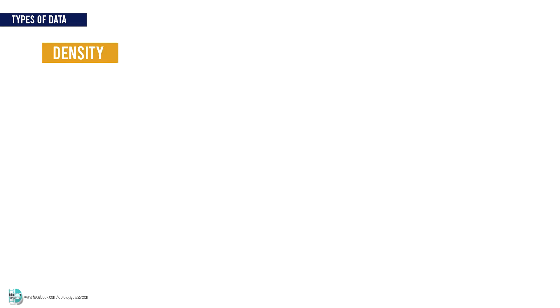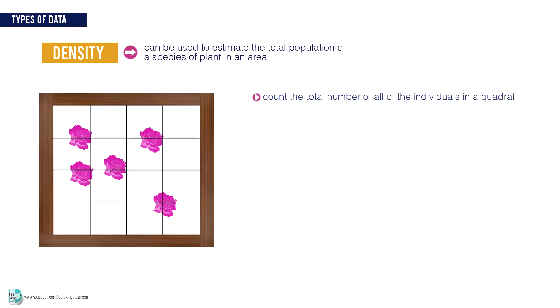The first one is density. This can be used to estimate the total population of a species of plant in an area. To do this, you need to count the total number of all the individuals of a particular species in a quadrat. Repeat the counting for a few times.